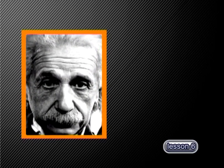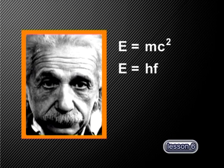Now to find the momentum of a photon, we need to refer to work done by Einstein. He used three equations. Firstly, his famous equation: energy is equal to mass times the speed of light squared. Secondly, the energy of a photon, E, is equal to Planck's constant, H, times the frequency of the photon, F. And thirdly, the momentum, P, is equal to mass, M, times the speed of light, C.